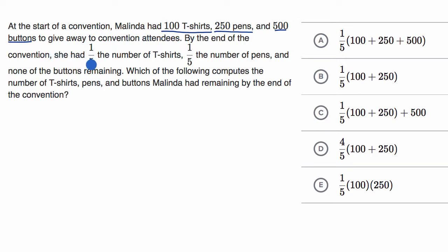By the end of the convention, she had one-fifth the number of T-shirts, one-fifth the number of pens, and none of the buttons remaining, or another way of thinking about it, zero buttons remaining.